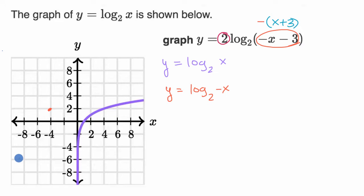And if you were to put in, let's say, whatever was happening at one before, log base two of one is zero, but now that's going to happen at negative one. Because you take the negative of negative one, you're gonna get a one over here, so log base two of one is zero.